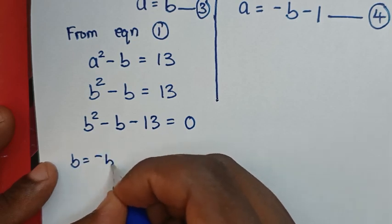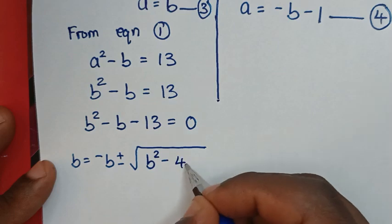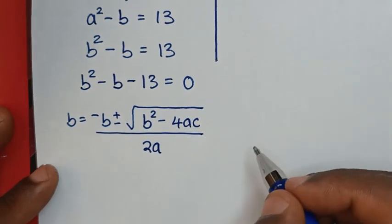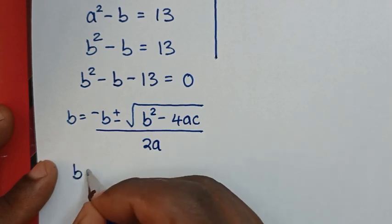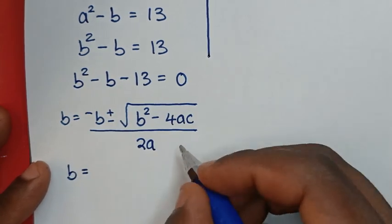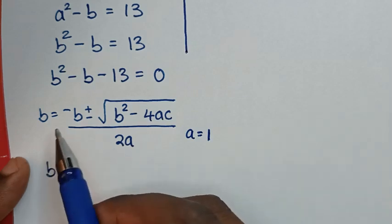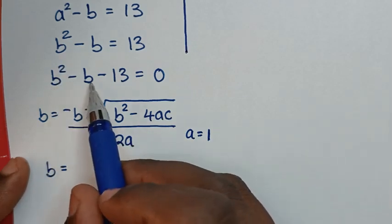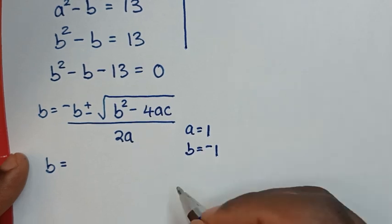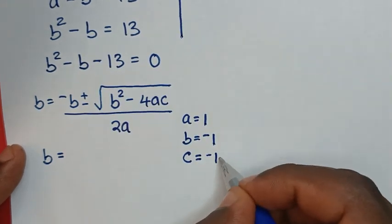The quadratic formula is b equals negative B plus or minus square root of B squared minus 4ac over 2a. From our equation, a equals 1 (coefficient of b squared), B equals negative 1 (coefficient of b), and c equals negative 13 (the constant term).